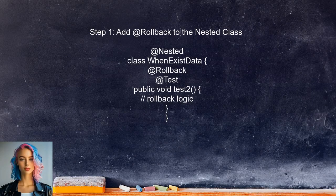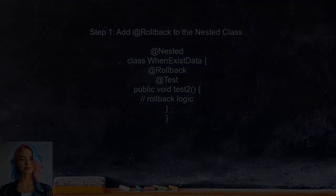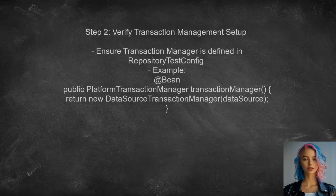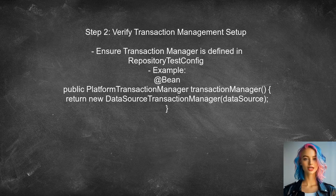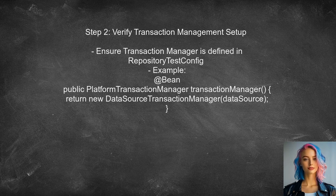To enable transaction rollback in the nested test class, the user should ensure that rollback behavior is correctly configured. This can be done by adding the @Rollback annotation to the nested class. Next, the user should verify that transaction management is properly set up in the test configuration, including ensuring the transaction manager is correctly defined in the Spring context.